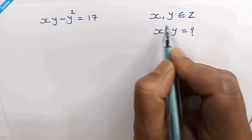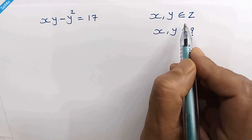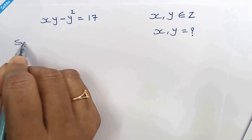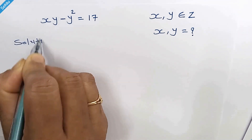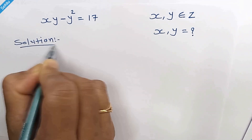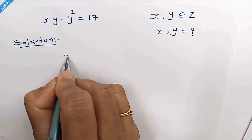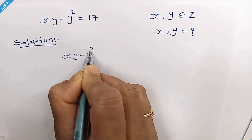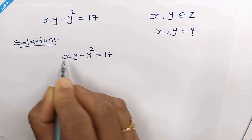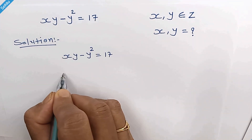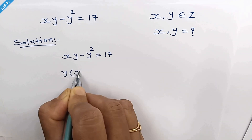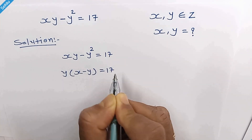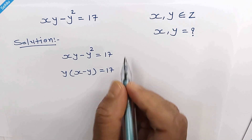Hello friends, we need to find the integer values of x and y. The equation is xy minus y squared equals 17. We can factor out y.